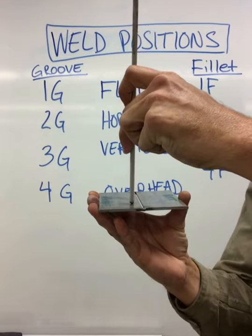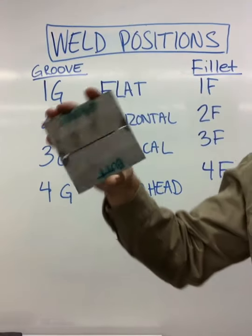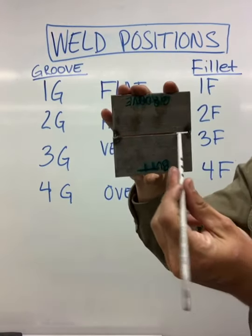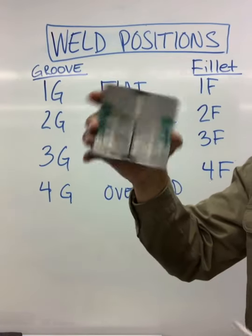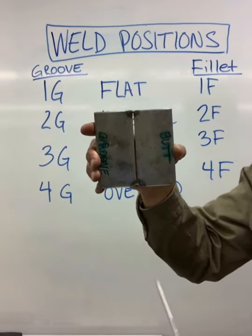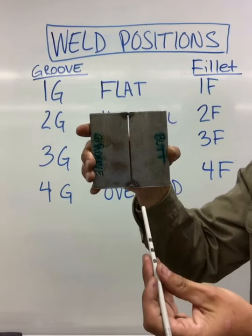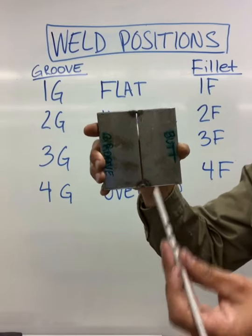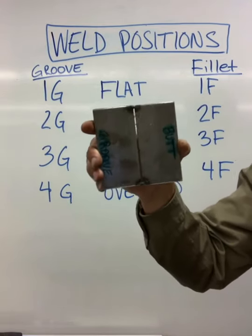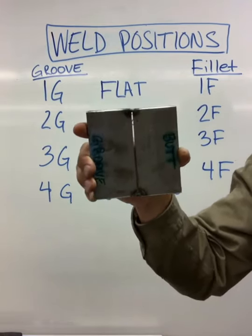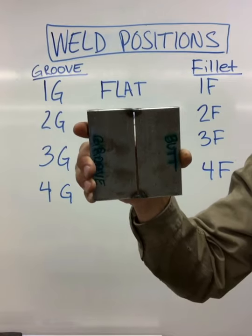Horizontal would then be welding across. That's 2G. Then vertical up or down. And the same rule can apply: thicker is typically up, and thinner is usually down—not in all cases, but that's kind of the general rule of thumb. So that would be your 3G.